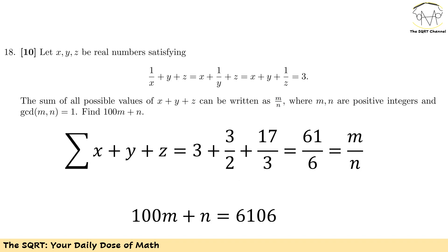Let's go back to the problem. It says the sum of all possible values of x plus y plus z can be written as m over n. We found that sum to be 61 over 6, so m equals 61 and n equals 6, which are positive integers.